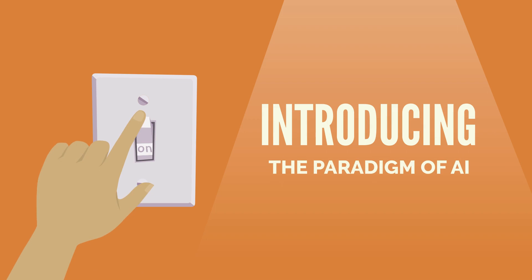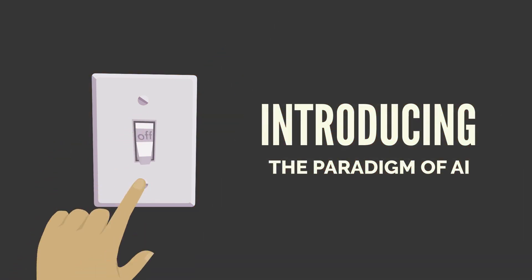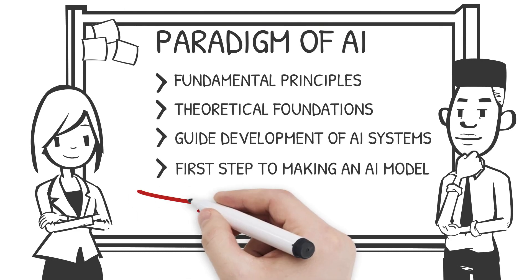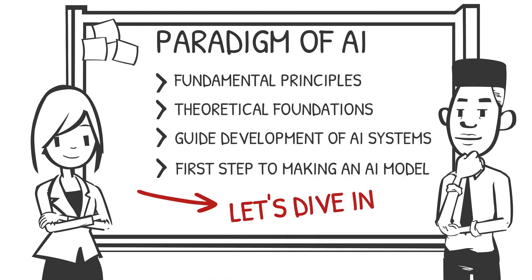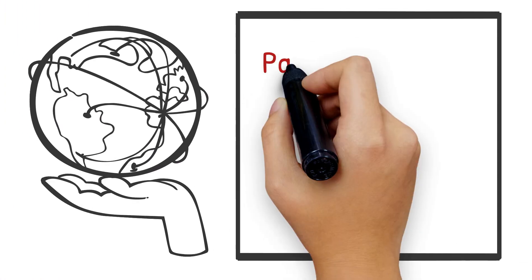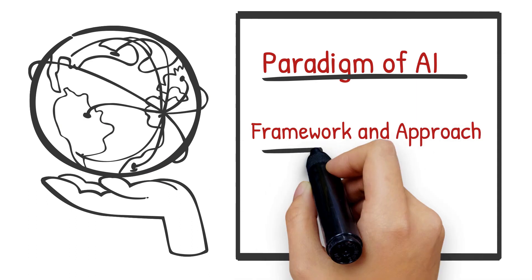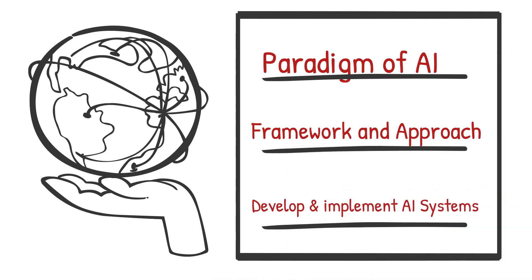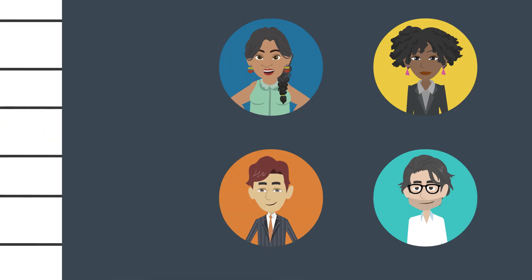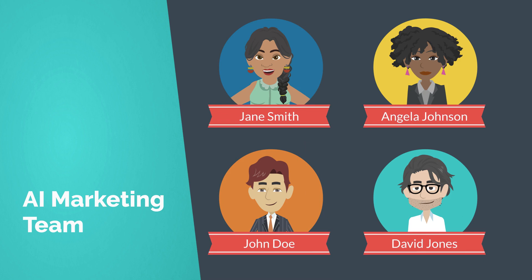The answer lies in the paradigm of AI — the fundamental principles and theoretical foundations that guide the development and implementation of artificial intelligence systems. The paradigm of AI refers to the overarching framework and approach used to develop AI systems. It encompasses the core concepts, techniques, and algorithms that enable machines to mimic human intelligence and perform tasks that would require human intelligence to complete.